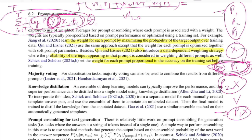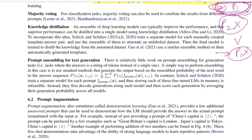Next is majority voting, which works analogously to random forest classification: whatever label the majority of prompts predict is assigned as the final label for that sample.